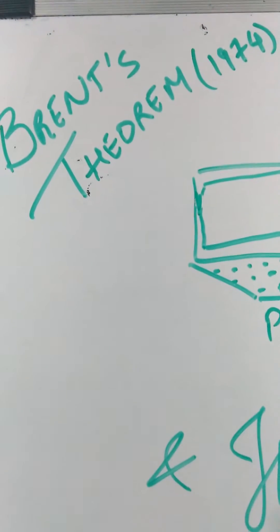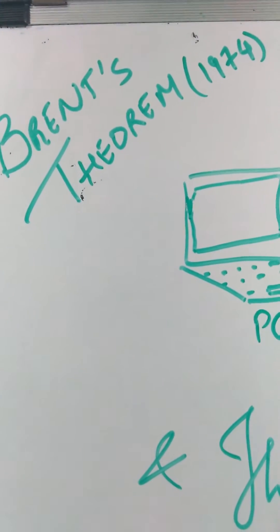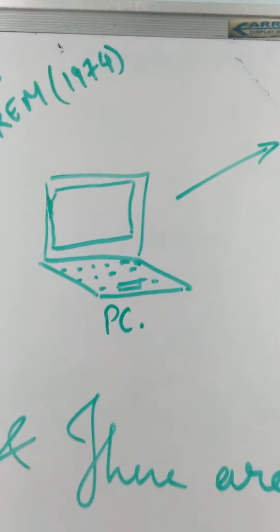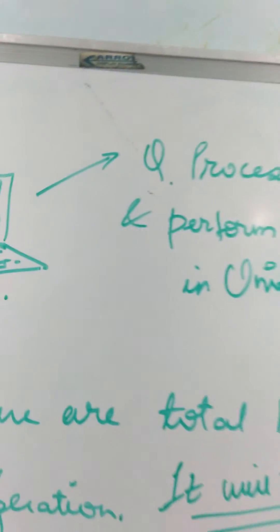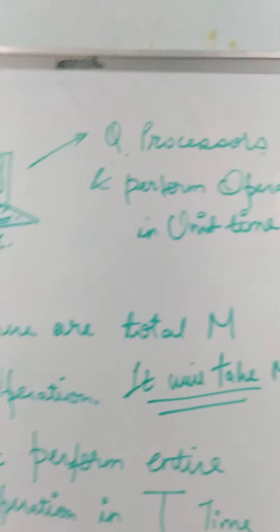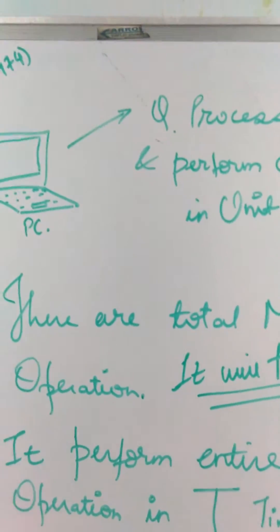What's up guys, welcome to my new video. In this video we will see what Brent's Theorem is. So let there be a PC and it has Q processors, and it performs an operation in unit time.